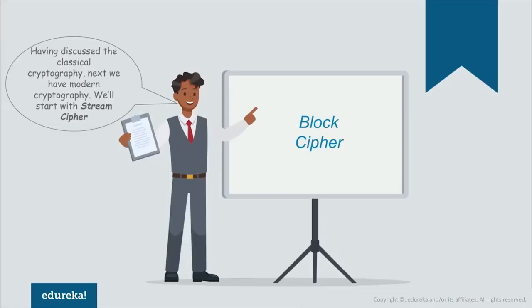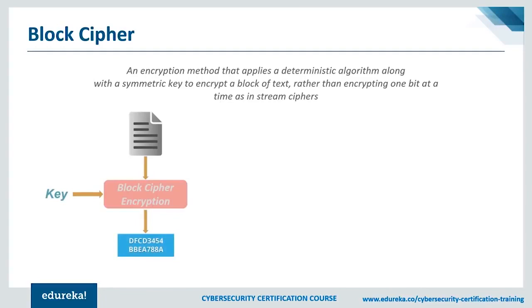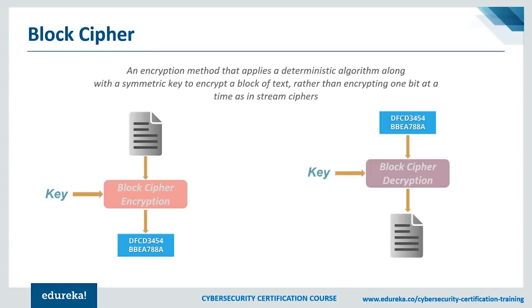A block cipher is an encryption method that applies a deterministic algorithm with a symmetric key to encrypt a block of text, rather than encrypting one bit at a time as in stream ciphers. For example, a common block cipher AES encrypts 128-bit blocks with a key of predetermined length — either 128, 192, or 256 bits. Block ciphers are pseudo-random permutation families that operate on a fixed size block of bits, and these PRPs are functions that cannot be differentiated from completely random permutations.